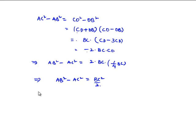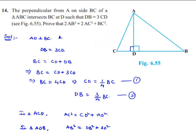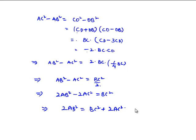Which implies 2 times AB square minus 2 times AC square is equal to BC square, which implies 2 times AB square is equal to BC square plus 2 times AC square. This is the required proof for us.